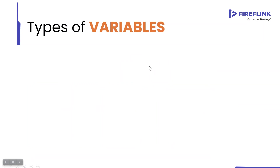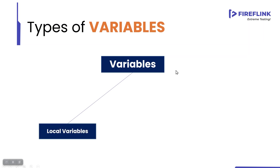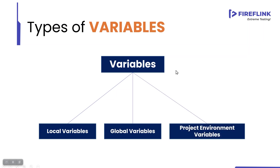Now, talking about types of variables, we have three different types of variables in the Fireflink platform. One is local variable, another is global variable, and the third is project environment variable. Let us explore them one by one.